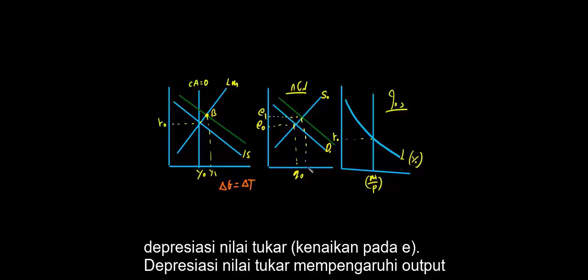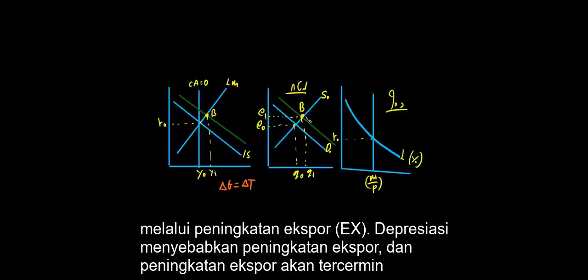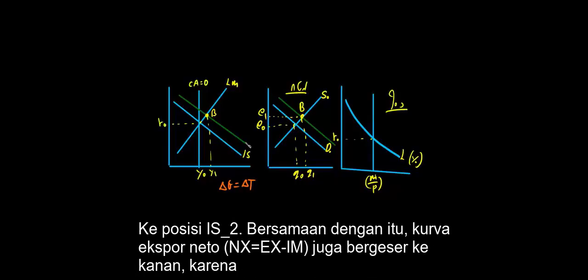A depreciation in the exchange rate again affects output in the way that production affects it. That is, the depreciation has now caused an increase in production. The increase in production will be reflected again in a shift to the right of the IS curve.